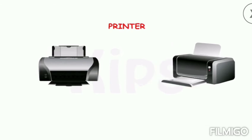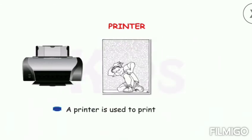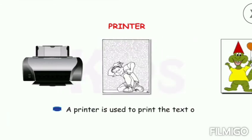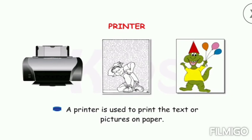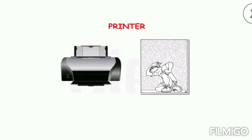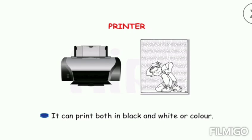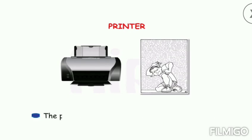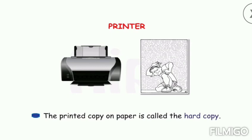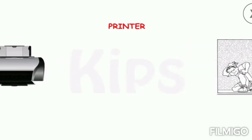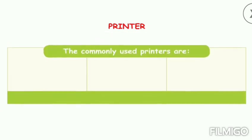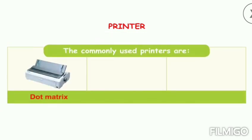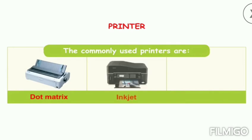A printer is used to print text or pictures on paper. It can print both in black and white or in color. The printed copy on paper is called the hard copy. The commonly used printers are dot matrix, inkjet, and laser.